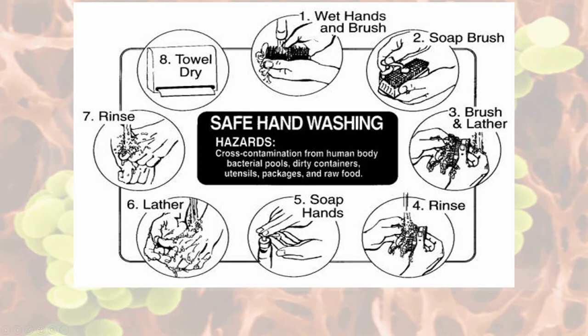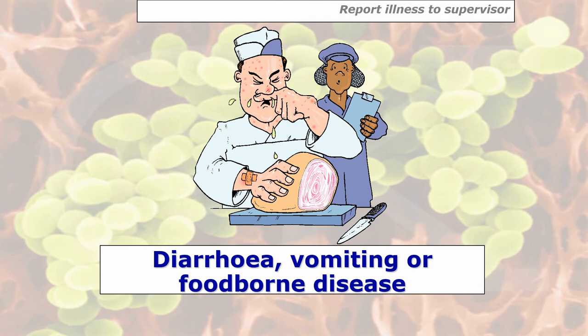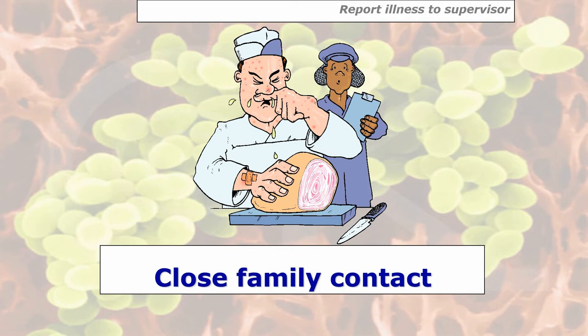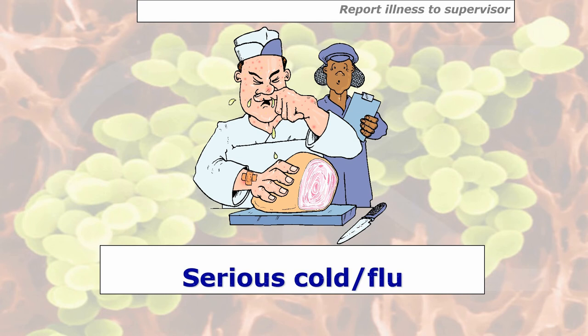Report illnesses to your supervisor — this is very important. You must report diarrhoea, vomiting or any foodborne disease. For example, if you've eaten suspect food at a party and everyone else came down with food poisoning but you didn't, you could have become a carrier. Report any close family contact with members who have food poisoning symptoms, and if you are ill whilst abroad — things like Delhi belly — report it to your supervisor before returning to work. Also report septic cuts and boils, serious colds and flu which promote coughing, and any skin infections.